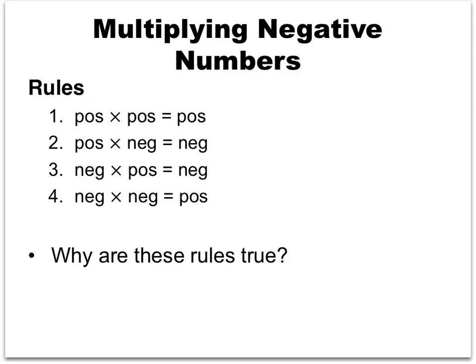That's all for Section 5.2. Section 5.3 is about multiplying negative numbers. I'll let you read the textbook, and in class we'll do an activity illustrating the key ideas. There are four rules: positive times positive equals positive; positive times negative equals negative; negative times positive equals negative; and negative times negative equals positive. The question is why are these rules true? The book gives an abstract explanation, and our class activity will justify them more concretely.